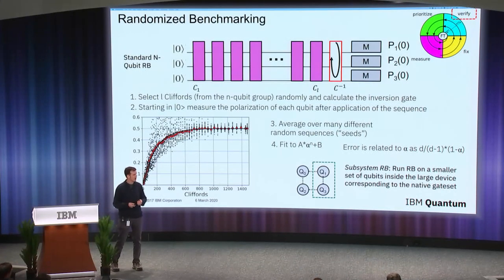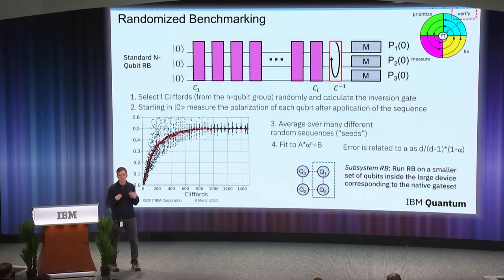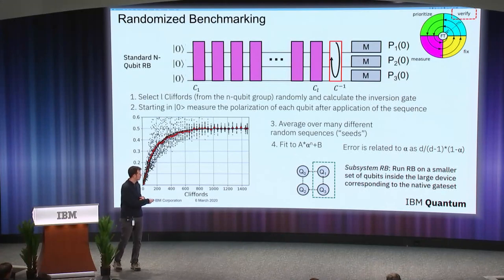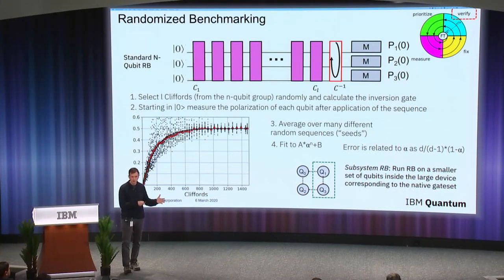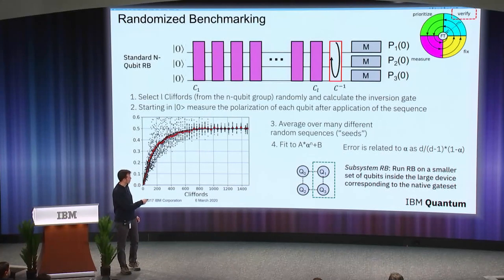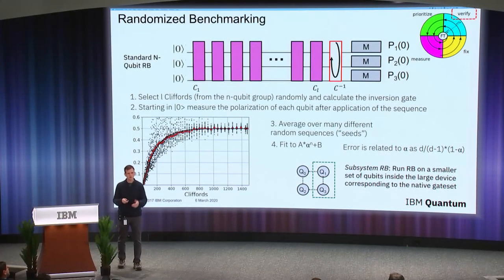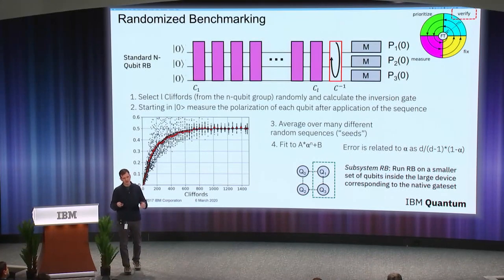When we say subsystem randomized benchmarking, we mean running randomized benchmarking on a subset of qubits in the device. Typically we want to run it on the subset of our native gates. For our superconducting qubit devices, we typically have a native gate set of one-qubit gate operations and two-qubit gate operations. So we run subset randomized benchmarking on all those one-qubit and two-qubit pairs where they have a gate in the set.